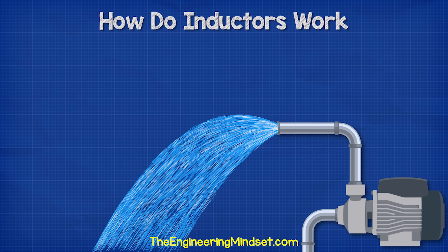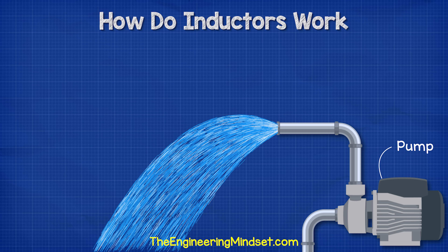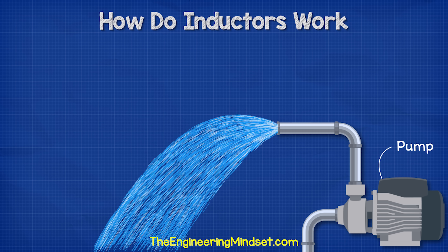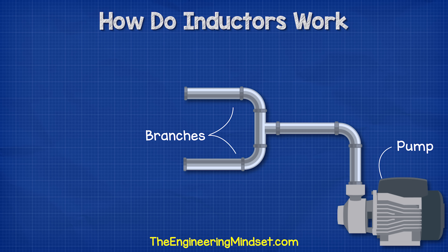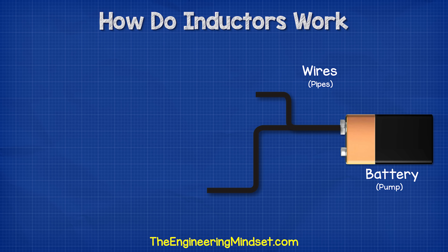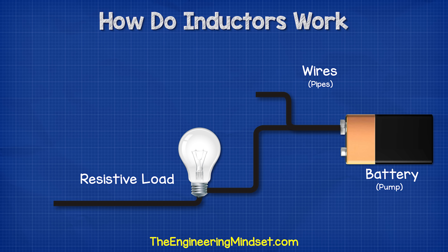Think about water flowing through some pipes. There is a pump which pushes this water, and the pump is equivalent to our battery in the circuit. The pipe will split into two branches, and the pipes are equivalent to our wires. One branch has a pipe with a reducer in it, and that reduction makes it a little harder for water to flow through it. So the reducer is equivalent to resistance in our electrical circuit.